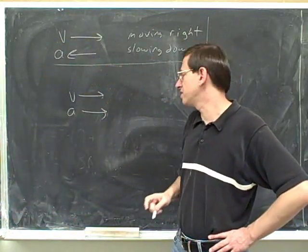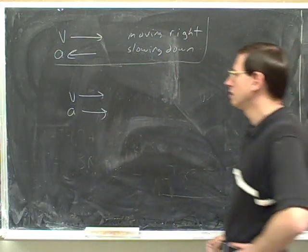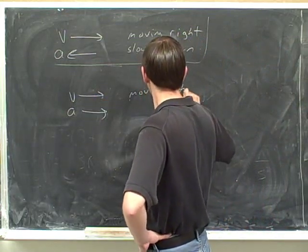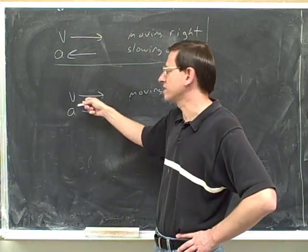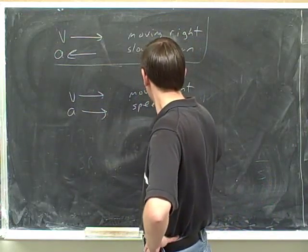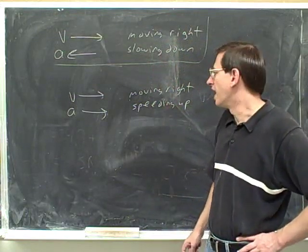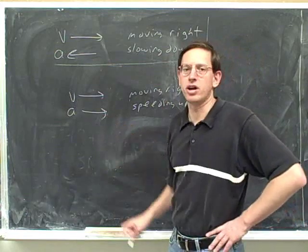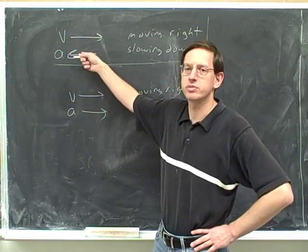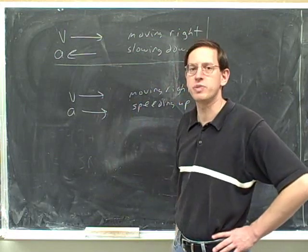Let's try the same exercise. Please pause the video and write down everything you can figure out about this object. The velocity tells us it's moving right. The acceleration is in the same direction as the velocity, so that means we're speeding up. This object is moving to the right and speeding up. In this case we're moving to the right and the acceleration is also to the right, but that's just a coincidence. The acceleration doesn't tell you which way you're moving — it tells you whether you're speeding up or slowing down.